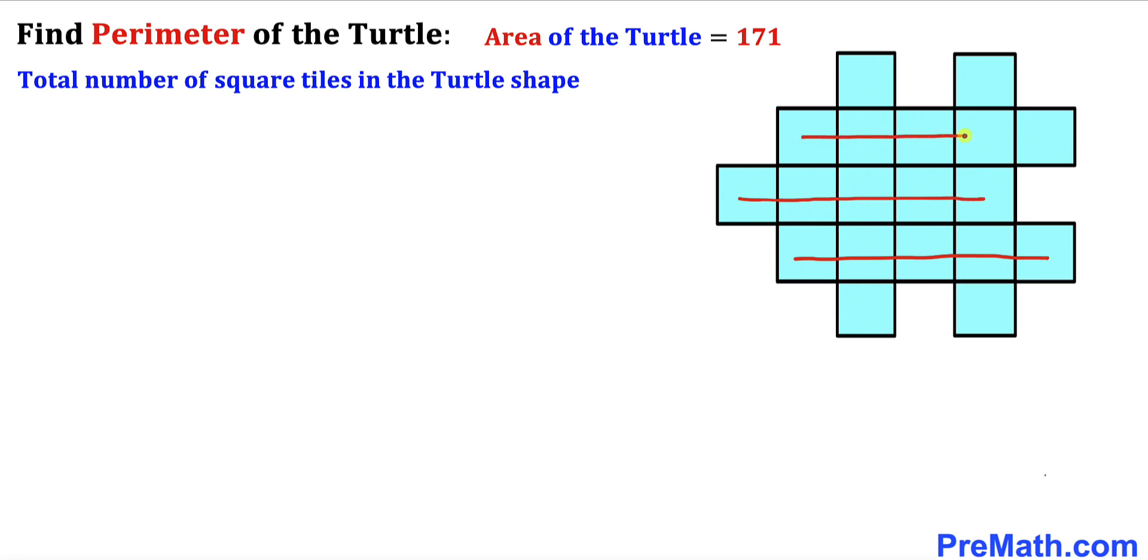And this is five, another one, that's going to be five plus five plus five is 15. That's going to be 16, 17, 18, and 19. So therefore we have got 19 square tiles in this turtle shape.